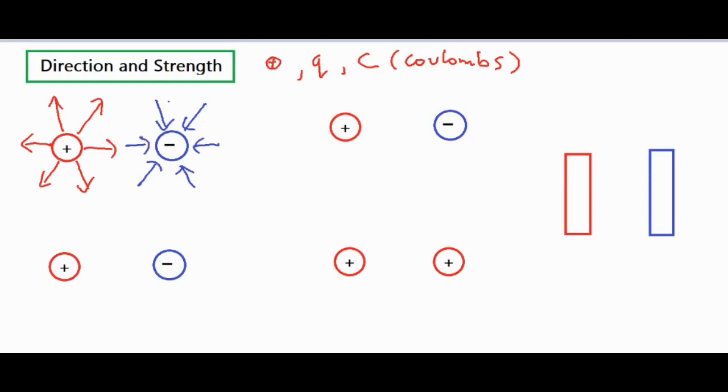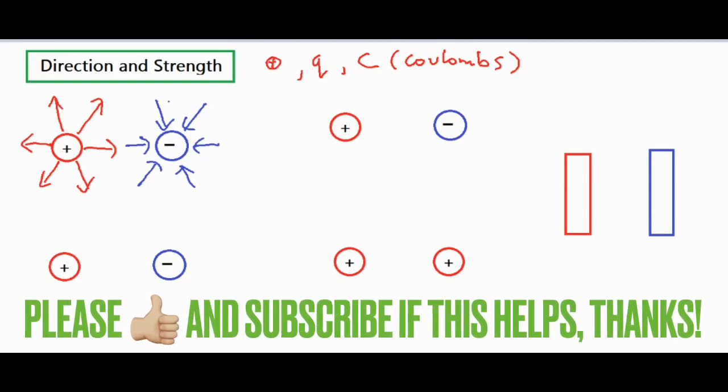So any kind of positive charge will always have some vectors pointing away from it, and negative charges will always have some vectors pointing towards it. Because everything is based on a positive test charge, in the event that you have a negative charge such as an electron, it would just move against the field lines in the exact opposite direction.